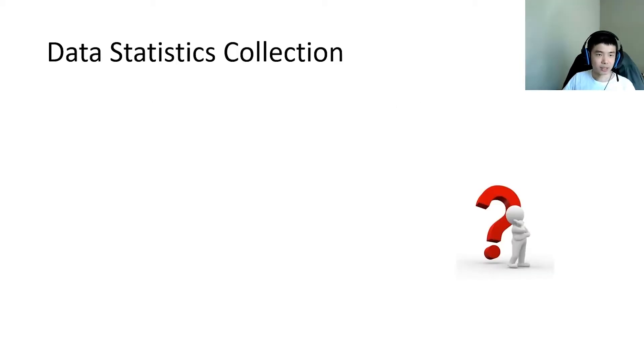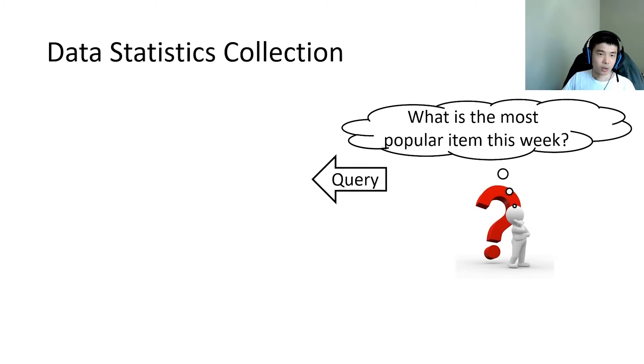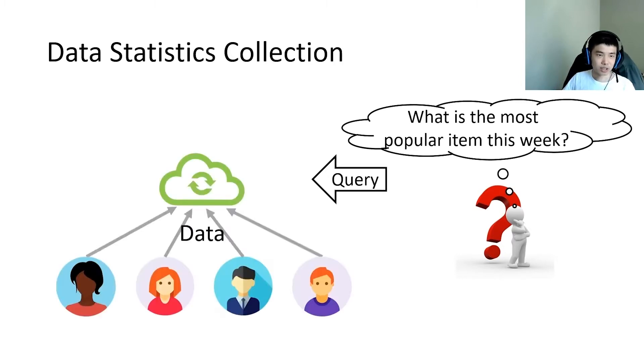In the traditional way of data statistics collection, when the query is sent to the cloud server, the cloud server directly collects users' data, computes the query's statistics and answers to the query. In such scenarios, the data collector or the central server needs to be trusted.